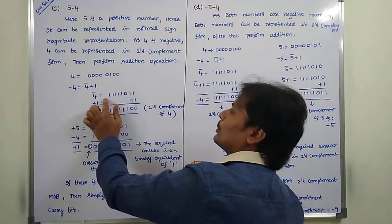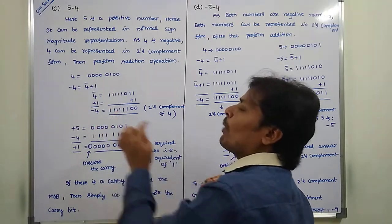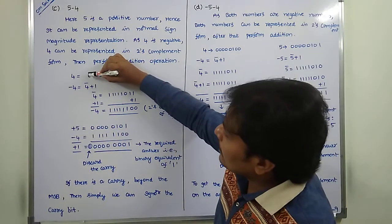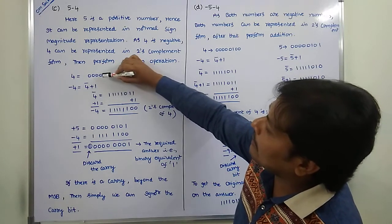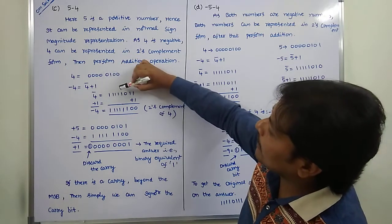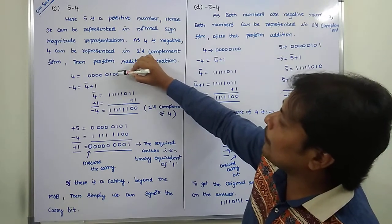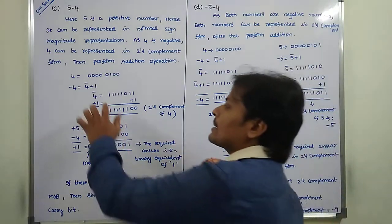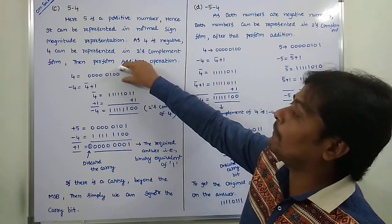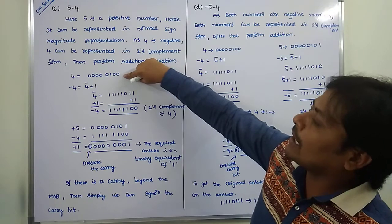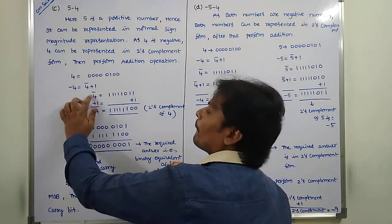Now, 4 complement is obtained by inverting each and every bit from 0 to 1 and 1 to 0. Each bit in the binary form of 4 — that is 00000100 — is inverted: every 0 is inverted to 1 and every 1 is inverted to 0. This gives us the 1's complement of 4.